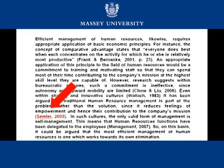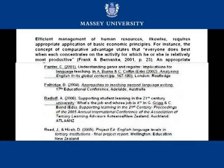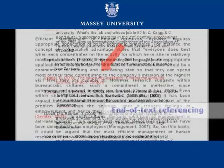Let's now turn to the general guidelines for referencing. Any reference occurs in two places in your assignment. First, it appears in the text — this is known as in-text referencing. Secondly, it appears in the reference list at the end of your assignment — this is called end-of-text referencing.